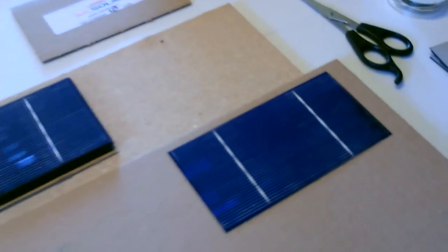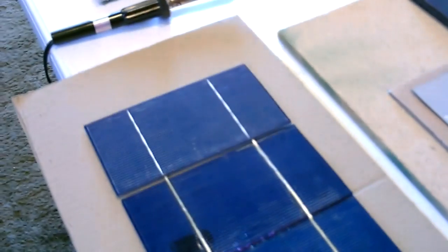Hey there. So in my last video I showed you how to take these un-tabbed solar cells and add the little metal tabbing to them. This video I'm going to show you how to hook up the tabbed solar cells into long strings so we can make a solar panel out of this.